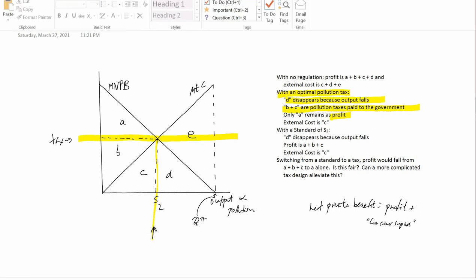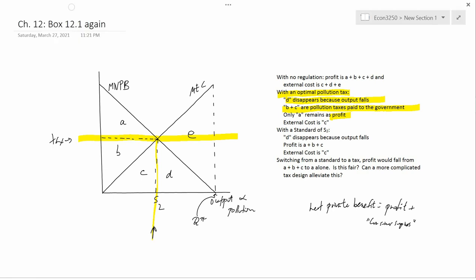That's the reason why only a remains as profit. Profit used to be a plus b plus c plus d, but d disappeared and then b plus c was taken by the government. So only a remains, and firms really don't like taxes. This polluting firm does not like a pollution tax because before I was making a plus b plus c plus d, and now it's just making a.